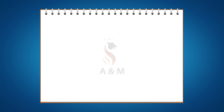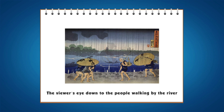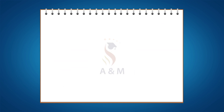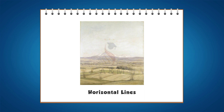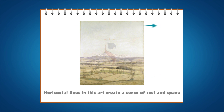Let's take an example of vertical lines. This art has vertical lines that direct the viewer's eye down to the people walking by the river. Let's take an example of horizontal lines. The horizontal lines in this art create a sense of rest and space. They suggest a flat landscape stretching out beyond the frame.